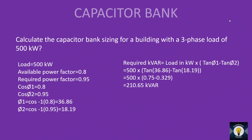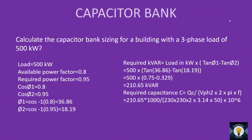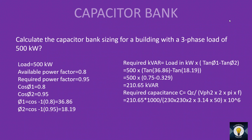If you want to know the capacitance in microfarad or farad, use the equation: C = QC / (V_phase² × 2 × π × f). Substituting: QC = 210.65 × 1000 VAR, divided by (230 × 230 × 2 × 3.14 × 50), and converting to microfarad (×10⁻⁶). The answer is 12628.1 microfarad.